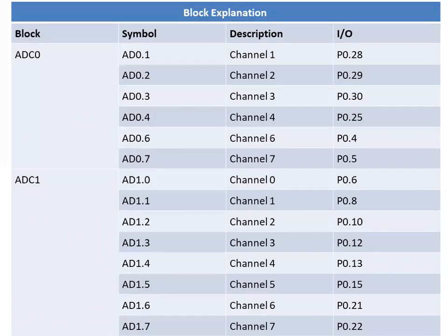For ADC0 channel assignments: AD0.1 is channel 1 on P0.28; AD0.2 is P0.29; AD0.3 is channel 3 on P0.30; AD0.4 is channel 4 on P0.25; AD0.6 is channel 6 on P0.4; AD0.7 is channel 7 on P0.5.